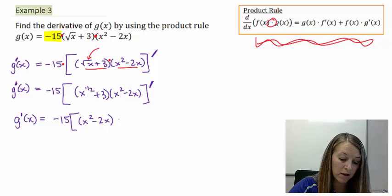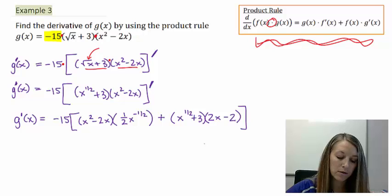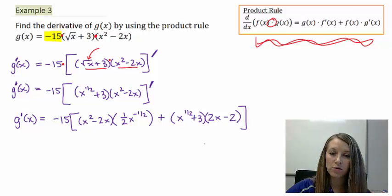Plus the original of my first equation, times the derivative of my second equation. So the derivative of x squared is 2x, and the derivative of minus 2x is just minus 2. So I have now taken the derivative by using my product rule.